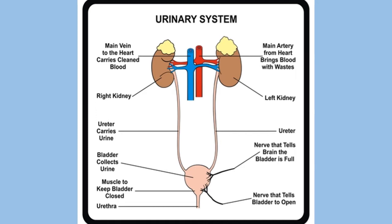The blue color represents the veins and the red represents the kidney. There are two kidneys present in our body. The veins carry clean blood that has been filtered by the kidney, and the blood goes through the vein towards the heart. The arteries bring blood from the heart with waste, and the kidney filters that out. There is a right kidney and a left kidney shown here.